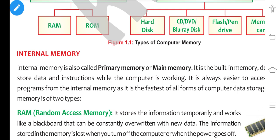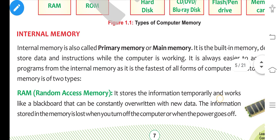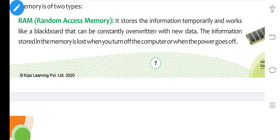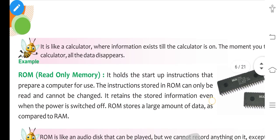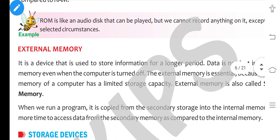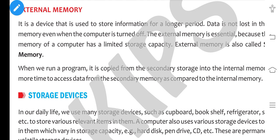Internal or primary memory is also called main memory, and it is divided into two parts: RAM and ROM. The full form of RAM is Random Access Memory. Information stored in RAM will be lost when the computer is turned off or power goes off, which is why it is called volatile memory. The full form of ROM is Read Only Memory. Whatever data is stored in ROM is retained even when the power is switched off, and it can store a large amount of data compared to RAM — it is called non-volatile memory.